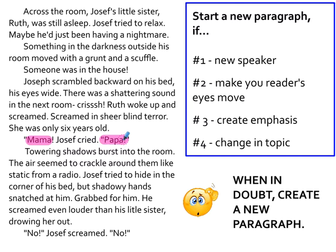Start a new paragraph anytime you want to make the reader's eyes move. For example, when Joseph is sitting here sleeping and then something moves in the darkness outside his room — Alan Gratz wants us as the reader to move our eyes to outside the room and notice something in the darkness moving. That's one of the ways you can help the reader follow your story through paragraphing — you can make them move their eyes to see what you want them to look at.